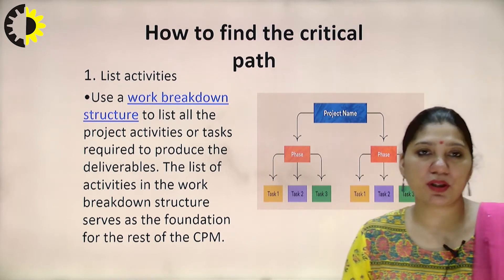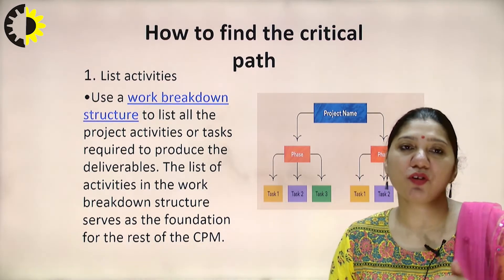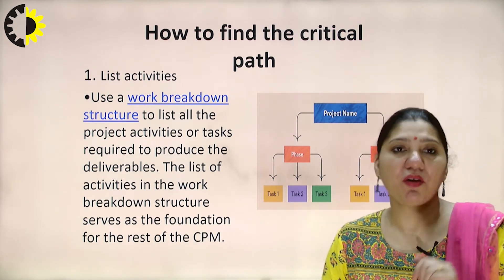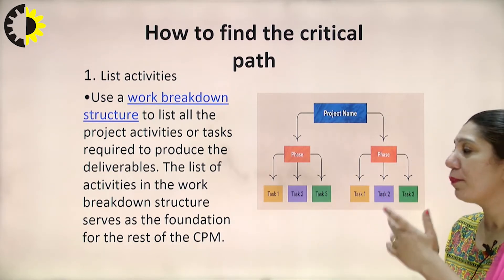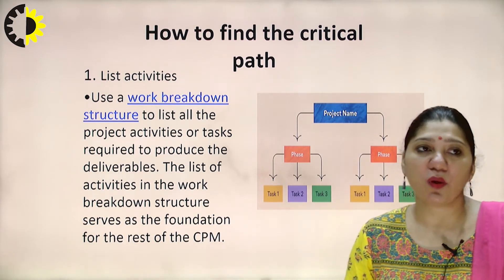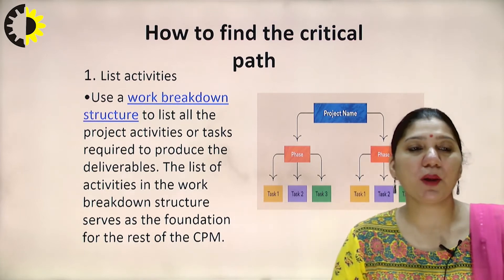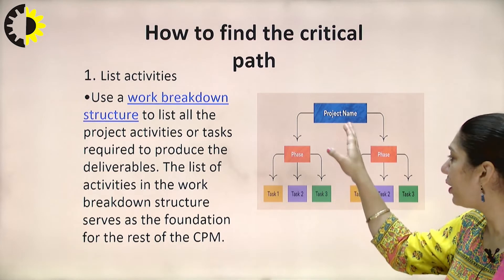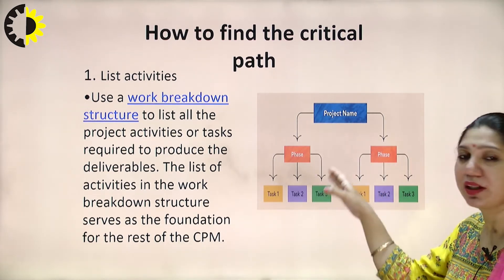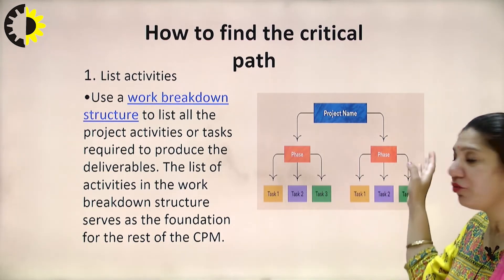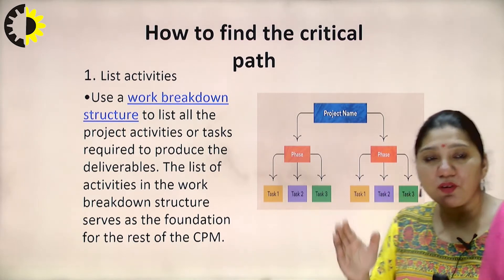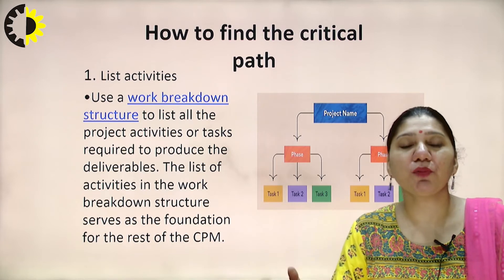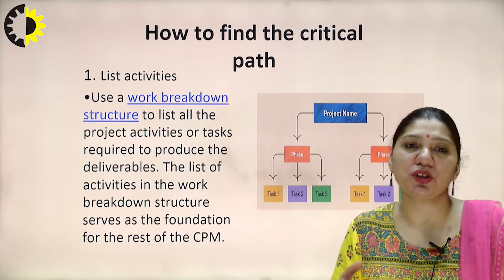How can we identify the critical path? After analysis of your project, you have to break your project into different modules — this is called the Work Breakdown Structure. It says to list all project activities or tasks required to produce the deliverables. The WBS serves as the foundation for the rest of the CPM. In the diagrammatic representation, we have the project name, different phases, and within each phase certain tasks — task 1, task 2, task 3. If you have a big project broken into small modules, the complexity gets reduced and at the end you can integrate the project completely.